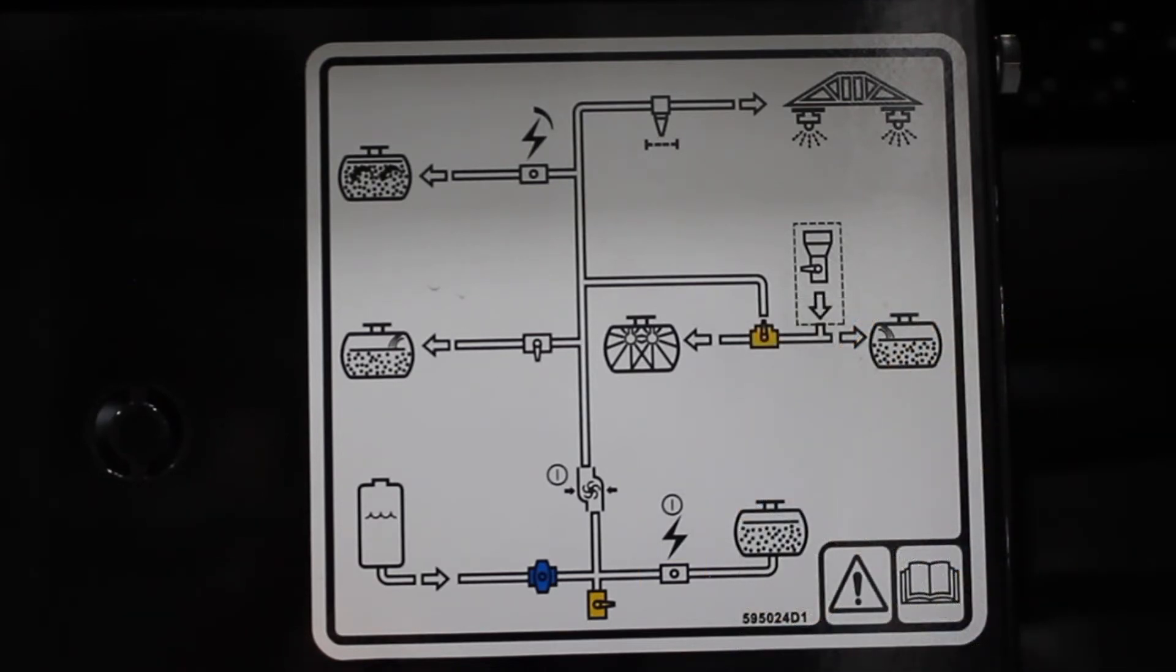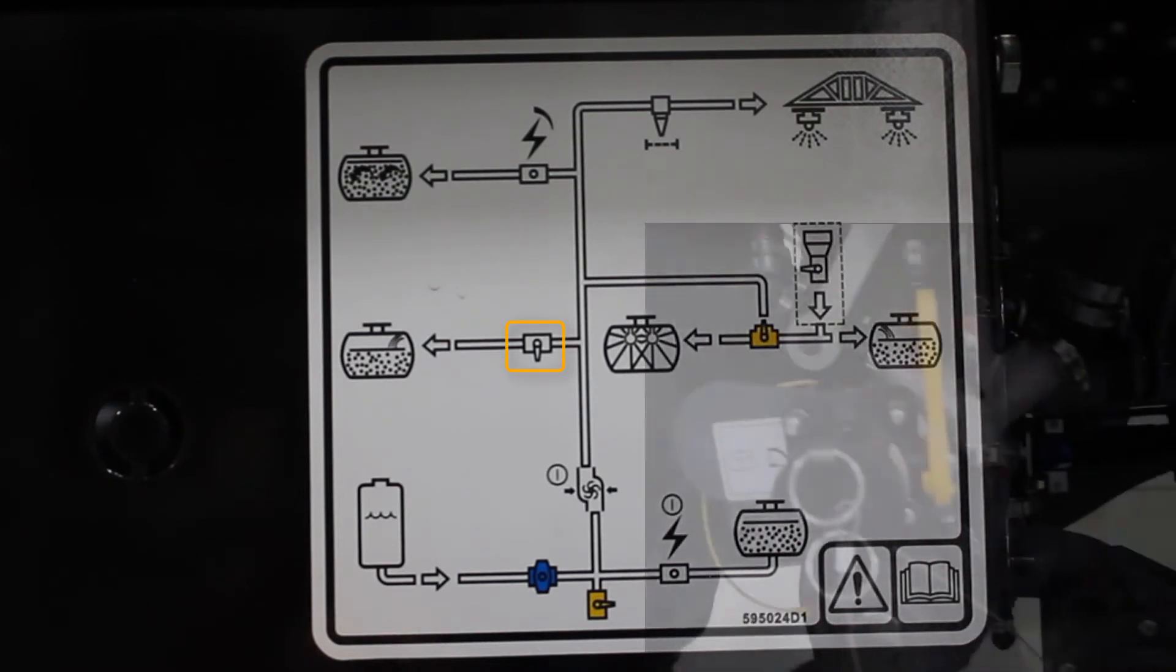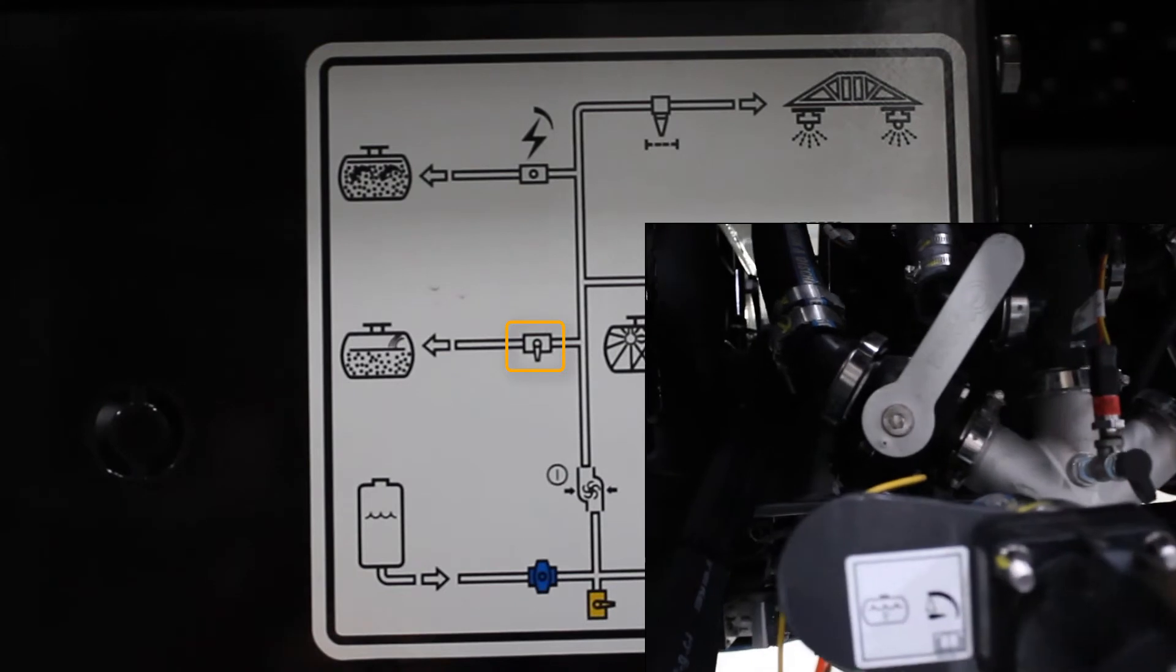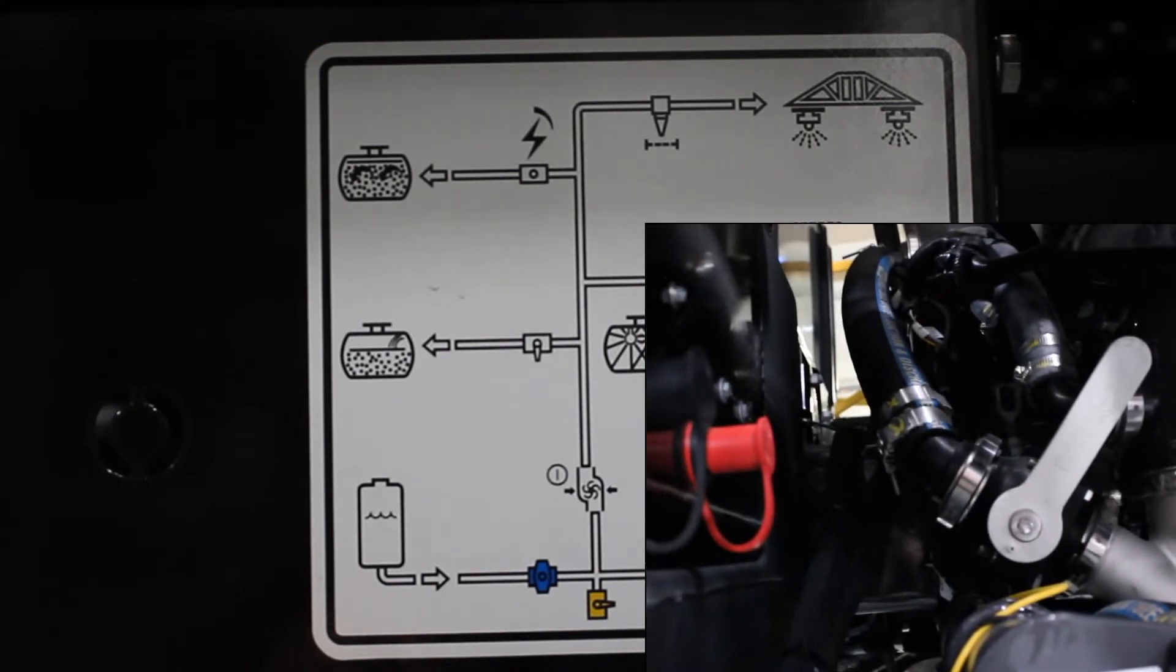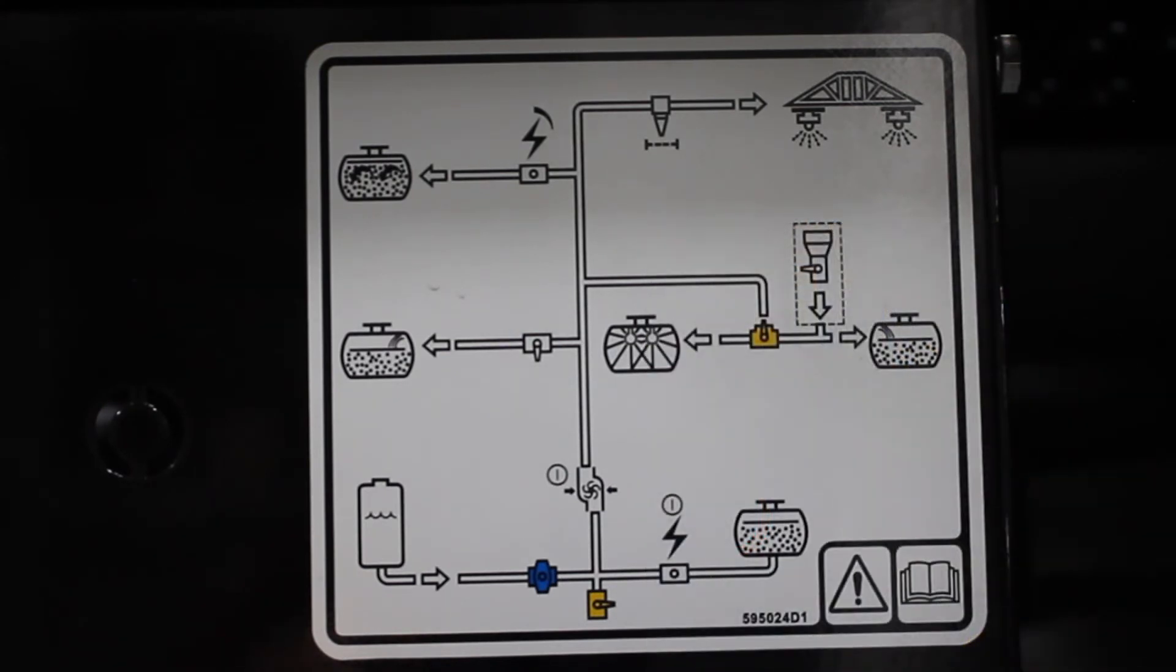Now moving to the pressure side on the left here we have a white valve. This is our bypass or reload valve. This is used when we're using the Rogator's product pump to reload the product tank.